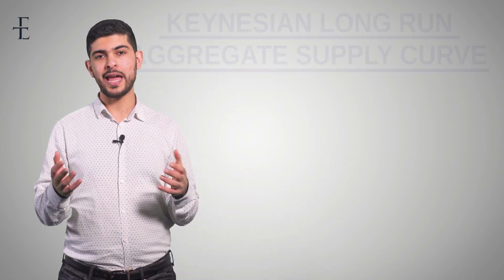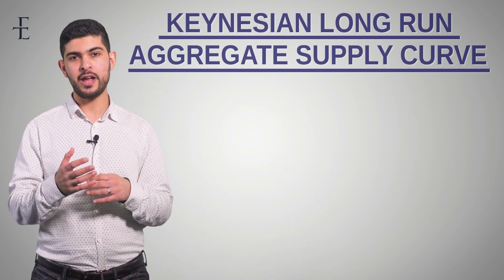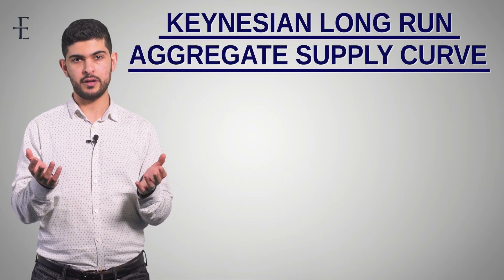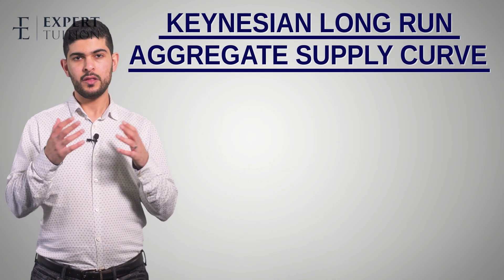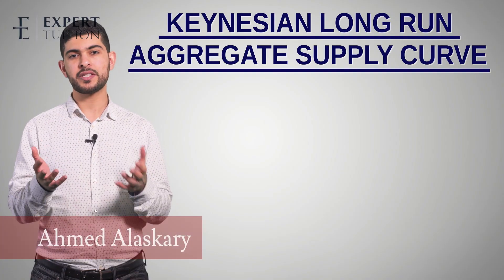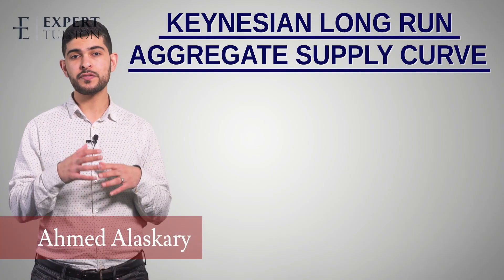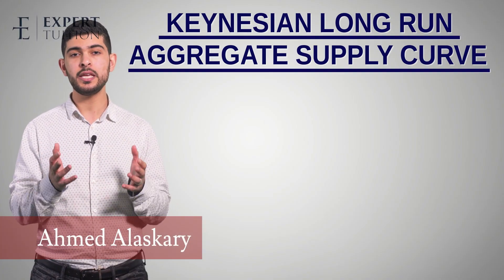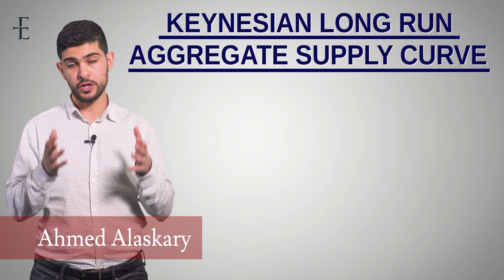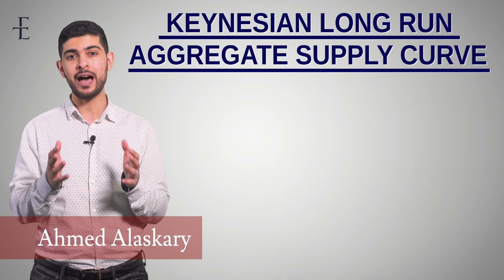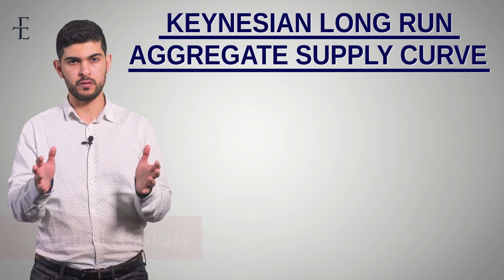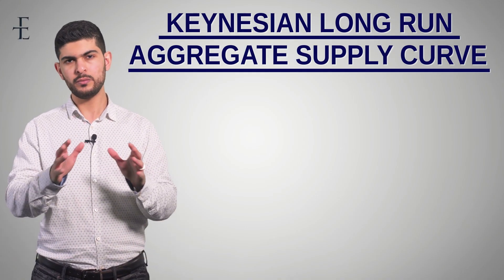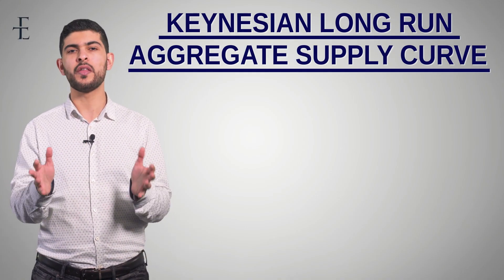Today we're going to explore the Keynesian long-run aggregate supply curve. The Keynesian long-run aggregate supply curve differs from the classical model in the sense that it assumes you can have output gaps in the long run, but we can deal with that at another time.